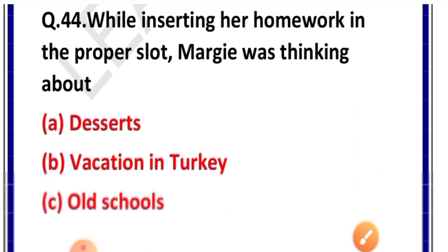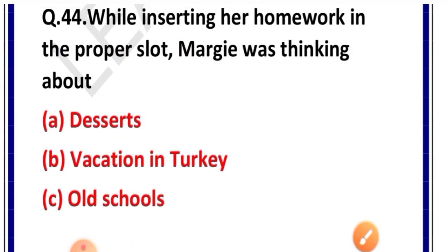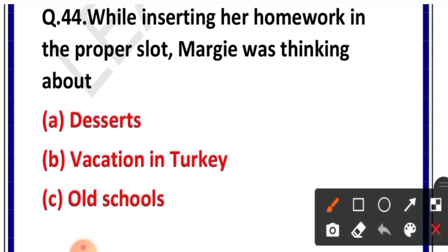Question number 44: While inserting her homework in the proper slot, Margie was thinking about — options: deserts, vacation in Turkey, old schools, Tommy. Correct answer is option C — old schools. Margie old schools ke baare mein soch rahi thi.